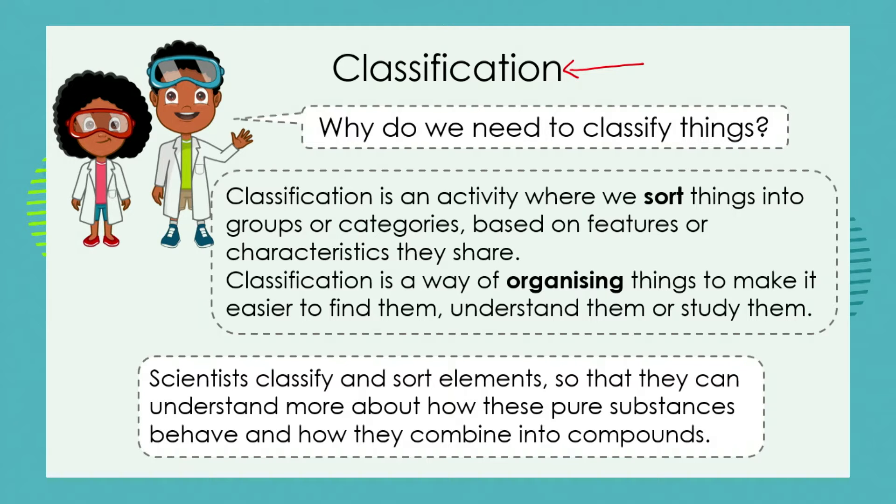Why do we need to classify things? Imagine going into a shop to do your shopping and there's no order in the shop. There are just shelves with random things on them. You've got your shopping list and you need to get some bread, but the bread isn't put on the shelf with the other baked goods — it's found with garden plants. That's very strange. And why is the milk not in the fridges with the other cold products? Why is the milk suddenly found with soap? That doesn't make sense.